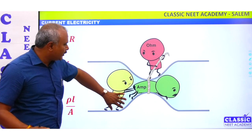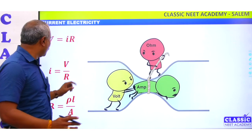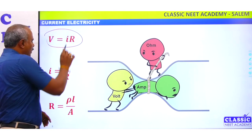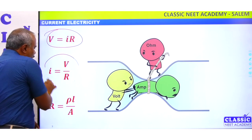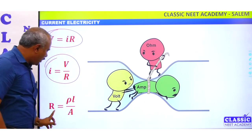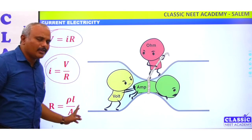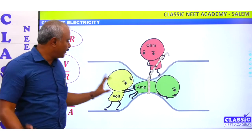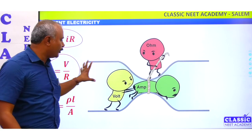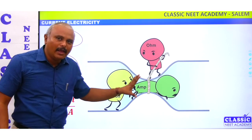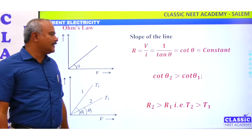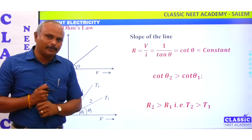We said V equals IR, I equals V by R. Now this is very important — we will see some concepts.